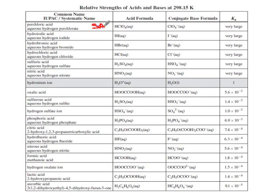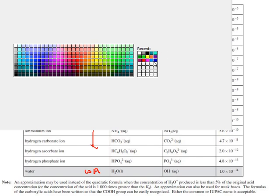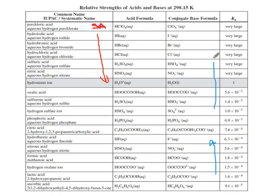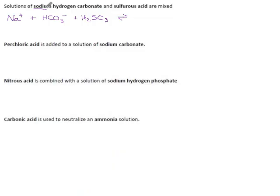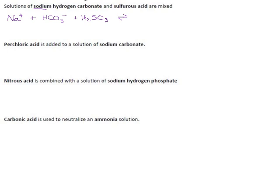The strongest acid on this list is perchloric acid, and the acids get weaker as you read down through both pages until you get to water, which is the weakest acid. Going in the other direction, hydroxide is the strongest base, and the bases get weaker as you read up the right-hand side, eventually ending at the perchlorate ion, one of the weakest bases we know of.